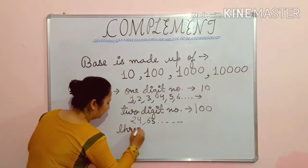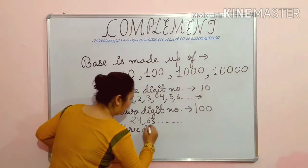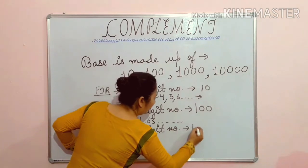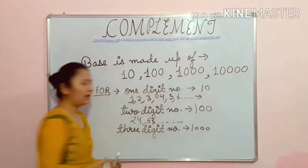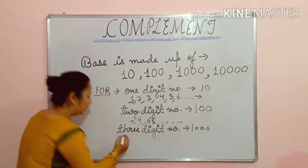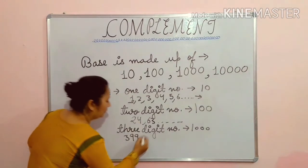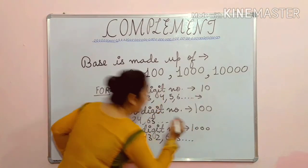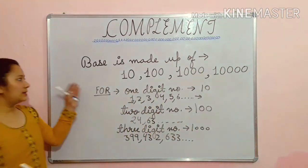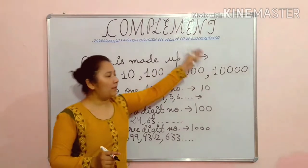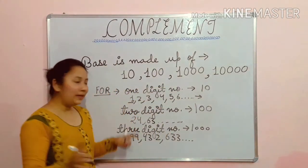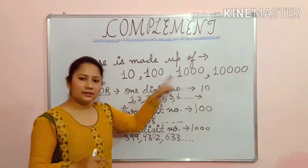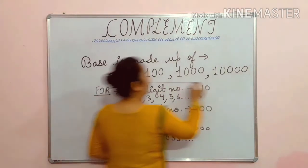If your number is a 3-digit number, then your base would be 1000. Like if your number is 399, 432, or 633, your base is 1000. So students, base is made up of the first digit 1 and the rest of the digits as zeros. These are all your bases.